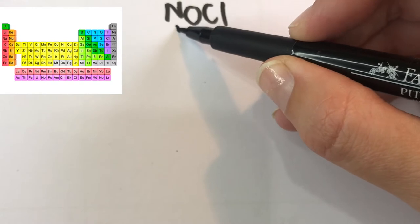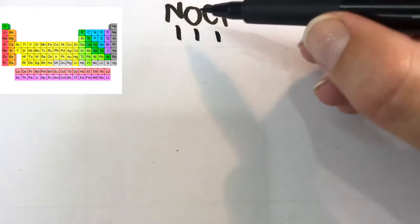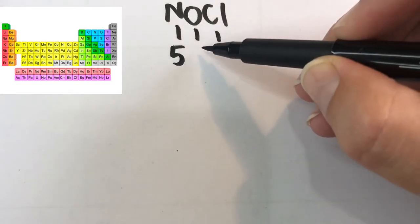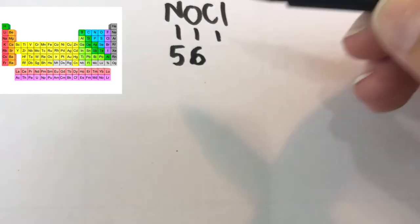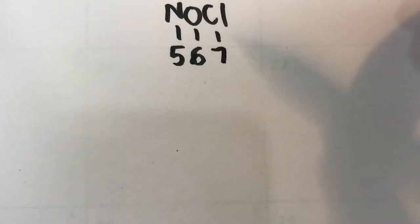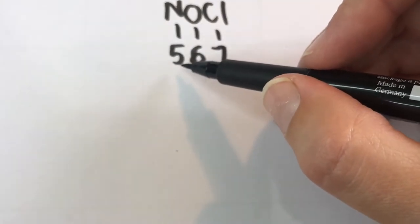So first of all, as always, I'm going to look at how many valence electrons each atom has. Nitrogen in group 15 has five, oxygen in group 16 has six, and chlorine in group 17 has seven.